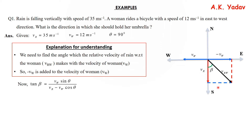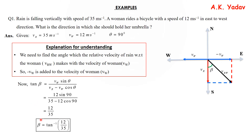So tan β = vw·sinθ / (vr − vw·cosθ), as derived previously. Putting in the values: tan β = 12/35, giving β = tan⁻¹(12/35) with the vertical towards west. That is the angle at which the woman should hold her umbrella to protect herself from rain. It is more of common sense — she has to tilt the umbrella in that direction to protect herself.